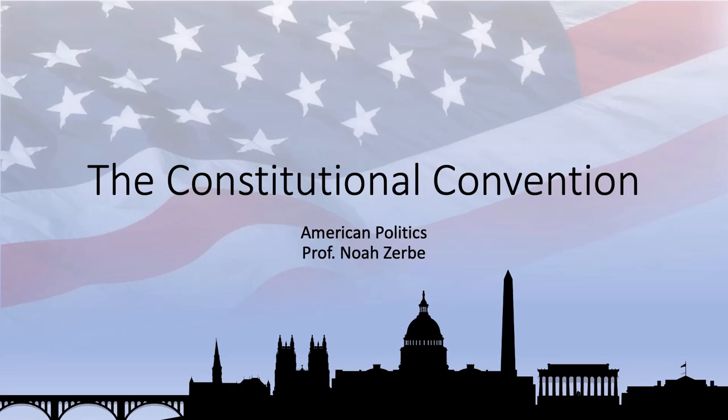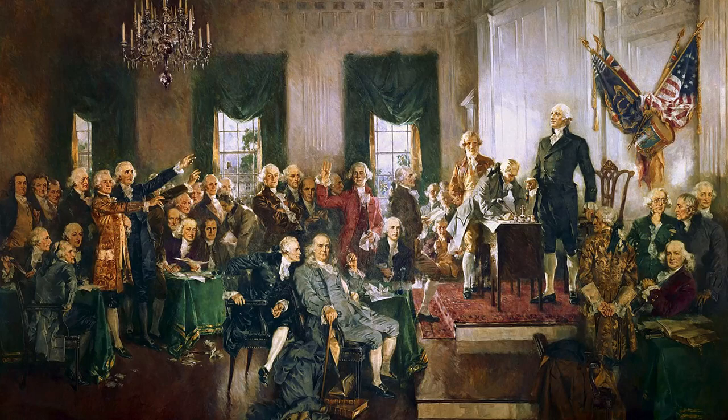When the 55 delegates to the Constitutional Convention met in Philadelphia in the summer of 1787, they were empowered by the Congress to meet for the sole and express purpose of revisiting the Articles of Confederation. With the exception of Rhode Island, all states were represented. Most of the states' delegations had no plans to draft a new constitution and likely would not have agreed to participate had they known that this was the goal.